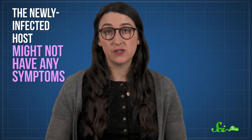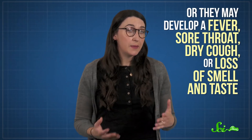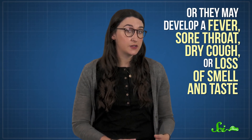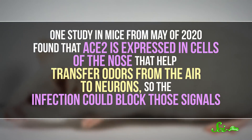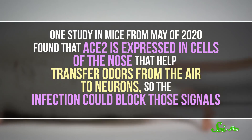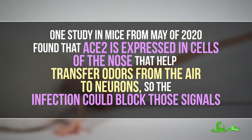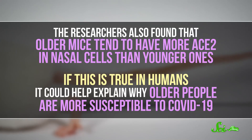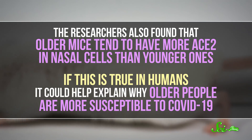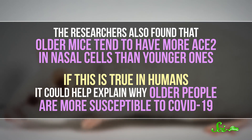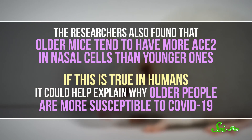At this point, the newly infected host might not have any symptoms. Or they may develop a fever, sore throat, dry cough, or loss of smell and taste. That loss of taste and smell might seem like the odd one out, but it has ACE2's fingerprints all over it. One study in mice from May of 2020 found that ACE2 is expressed in cells of the nose that help transfer odors from the air to neurons, so the infection could block those signals. The researchers also found that older mice tend to have more ACE2 in nasal cells than younger ones. If this is true in humans, it could help explain why older people are more susceptible to COVID-19.